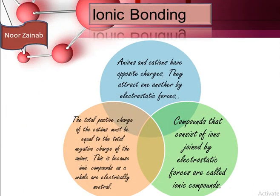In ionic bonding, anions and cations have opposite charges and attract one another by electrostatic forces. Compounds that consist of ions joined by electrostatic forces are known as ionic compounds. The total positive charge of cations must be equal to the negative charge of anions because ionic compounds as a whole are electrically neutral.